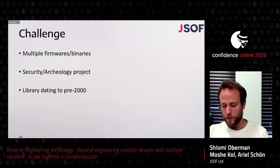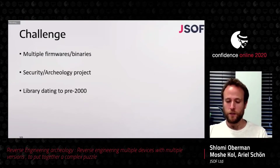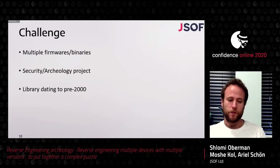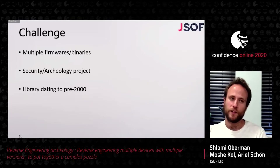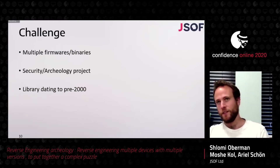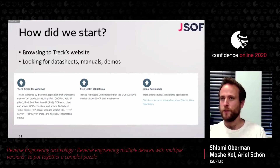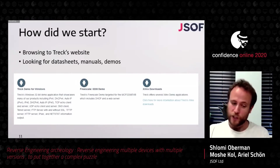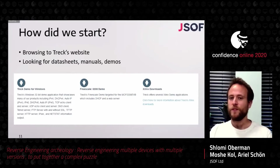There's a lot of years of history to this project. The library itself dates to before the year 2000. Throughout the project we realized we were dealing with a strange supply chain issue and multiple-history problem, and we started calling it an archaeology project. Some of the challenge was just getting the firmwares and devices themselves. Now I'll transfer the mic to Moshe Kol, who will talk about how we started the research — immediately after deciding that the Treck TCP/IP library was a good target.